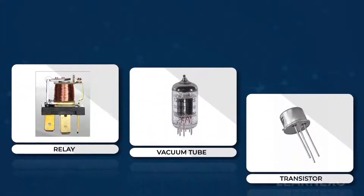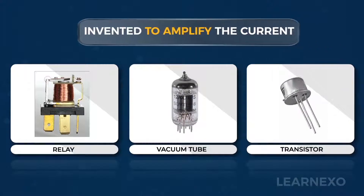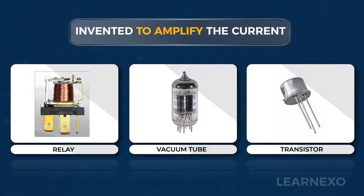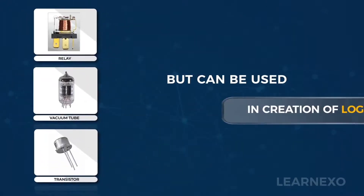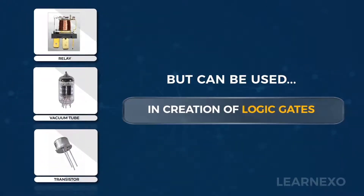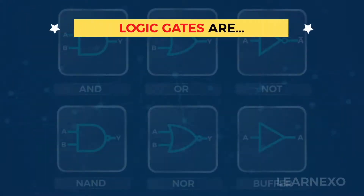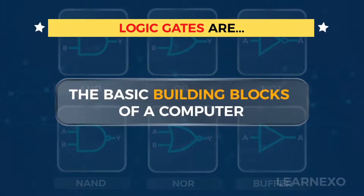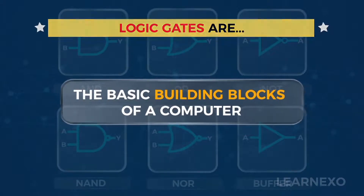Relays, vacuum tubes, and transistors were all invented to amplify current. But all of them can be used in the creation of logic gates, and those logic gates are the basic building blocks of a computer.